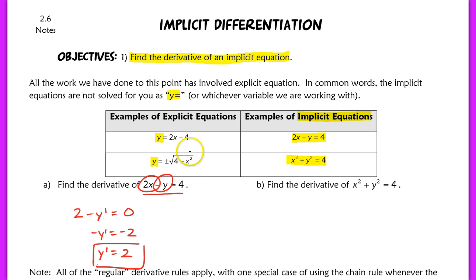We can verify that this is the derivative by looking at the explicit form of the equation — y prime is equal to 2. It's much faster to find the derivative when a function is already written in explicit form, but not every function can be written that way. Sometimes you'll never be able to solve for y, or it'll be really difficult to isolate y. That's why we need implicit differentiation.